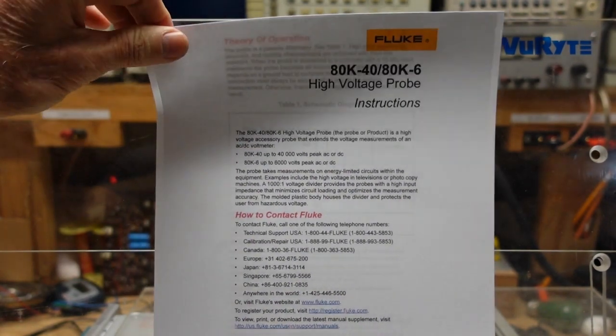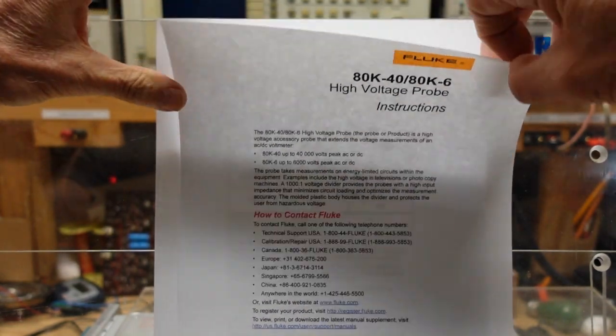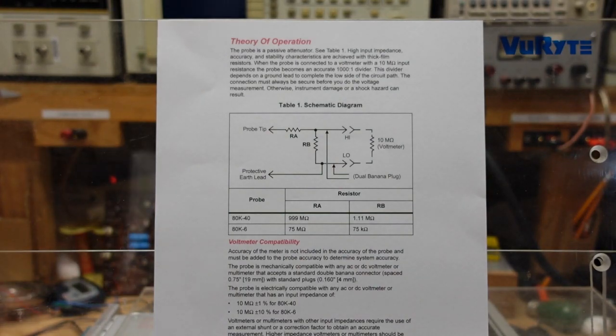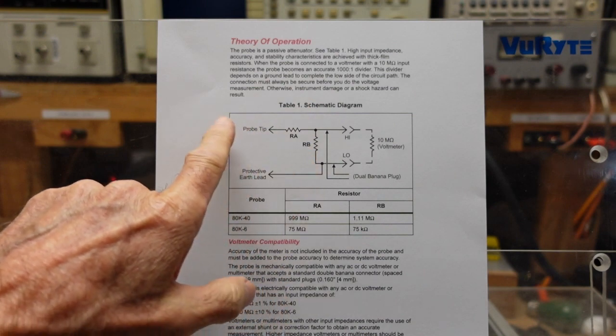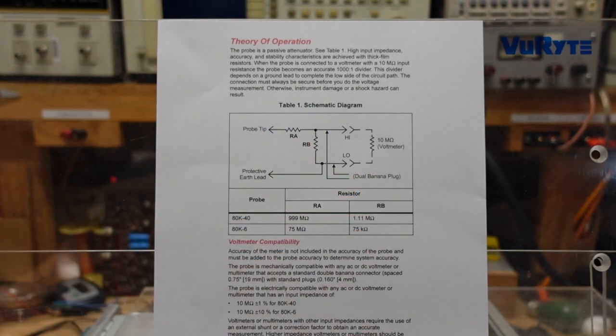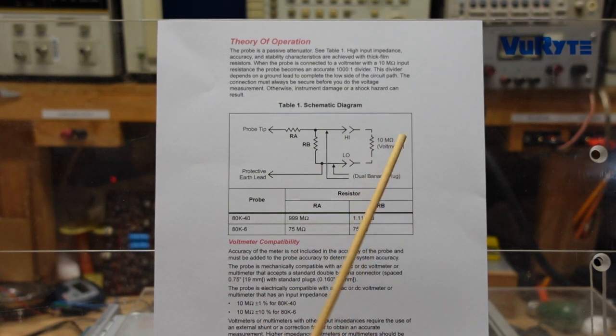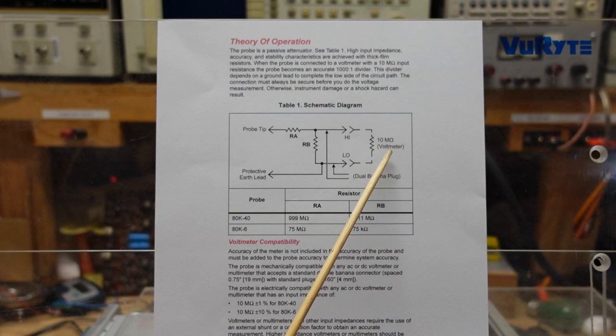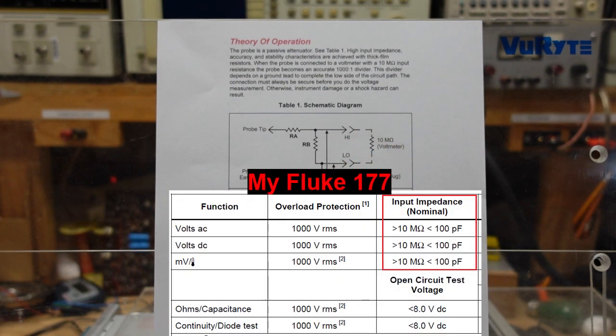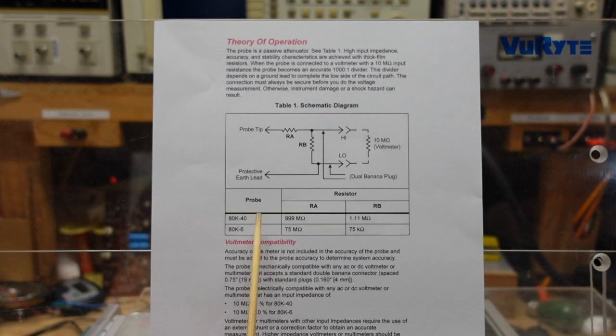Let's take a look at this page of the manual. This gives you the theory of operation. The probe is basically a passive attenuator. You can see it's just a simple voltage divider and it uses the 10 megohm input impedance of the meter. This is why it's so important for you to have a meter that has an input impedance of 10 megohm. These are the values of the resistors that you would see in this circuit for the various types of probes that you buy.